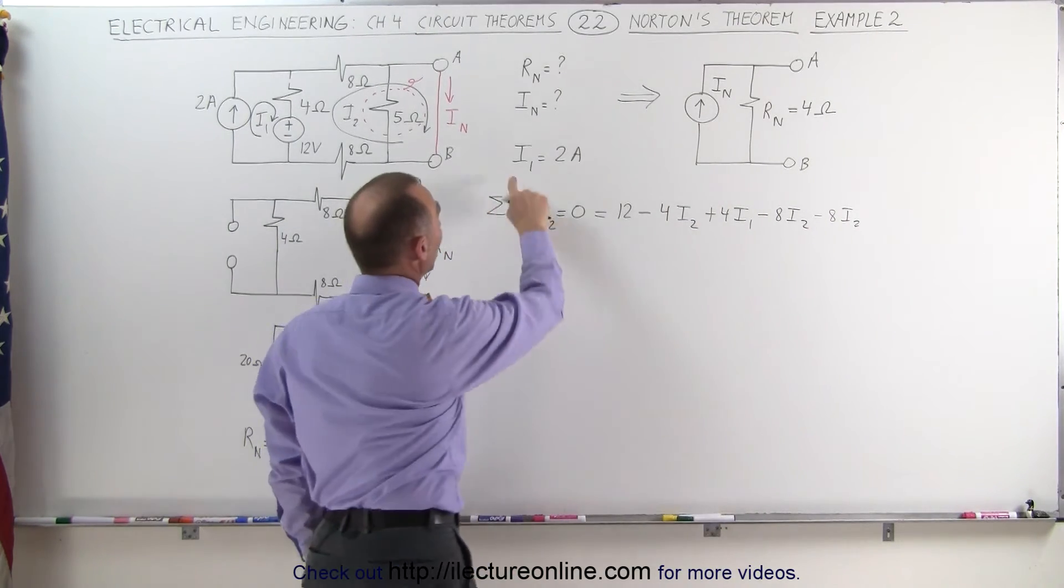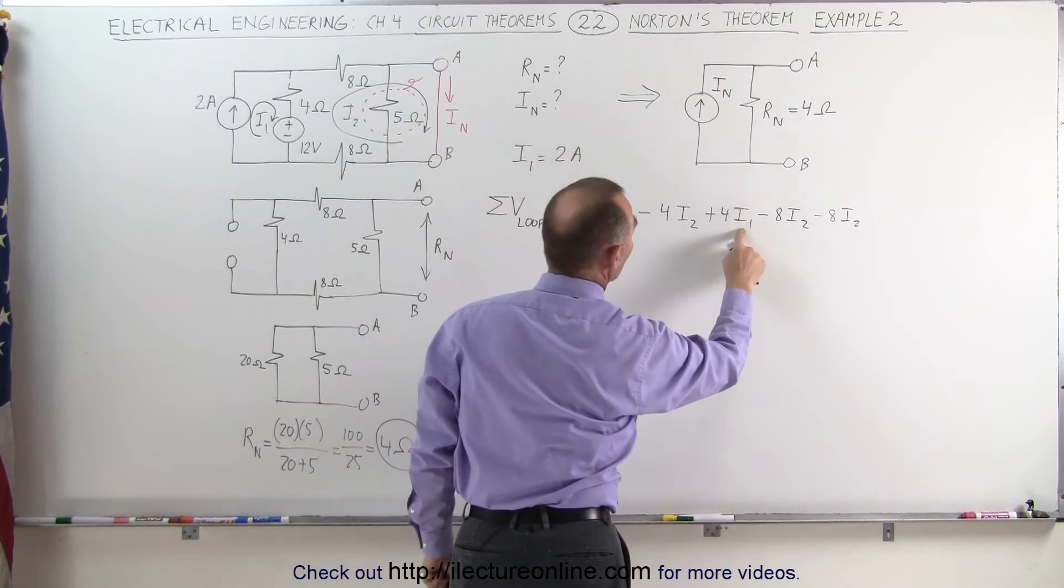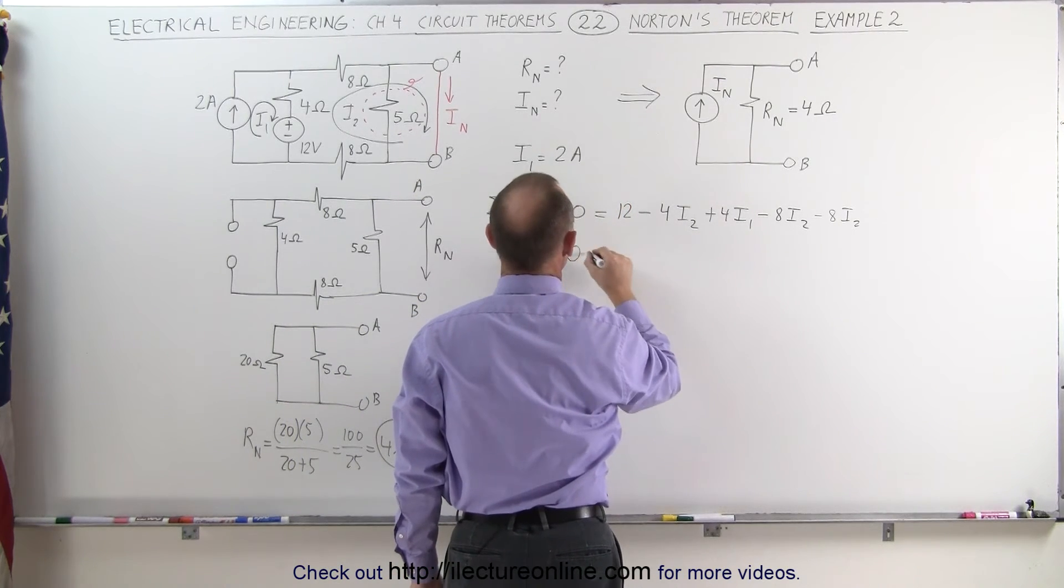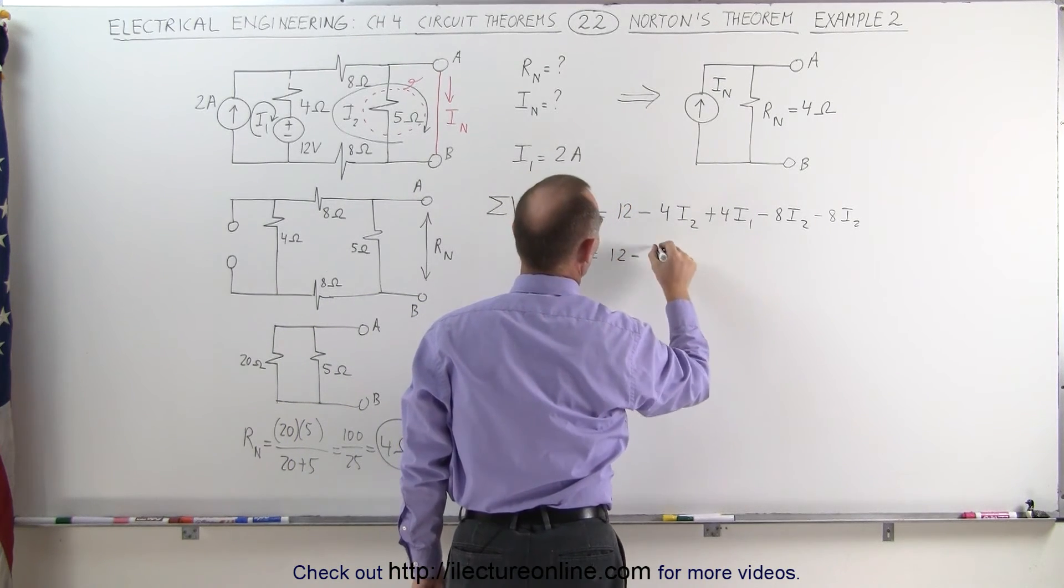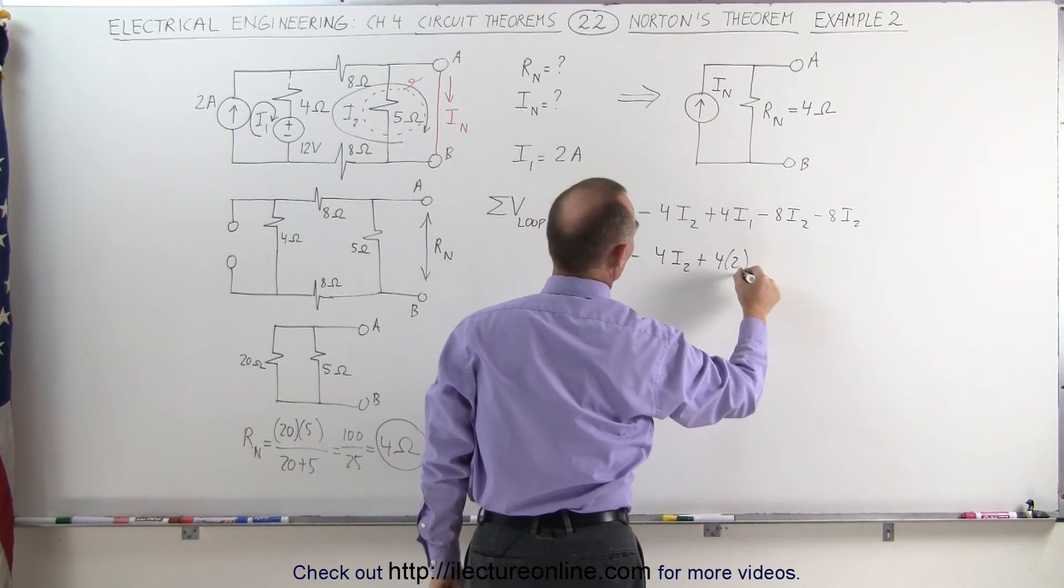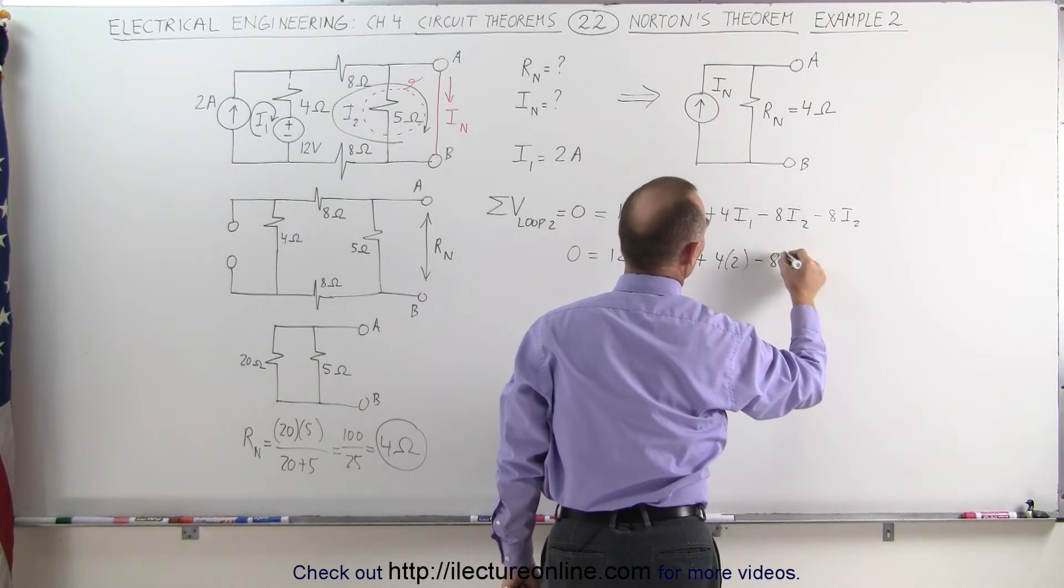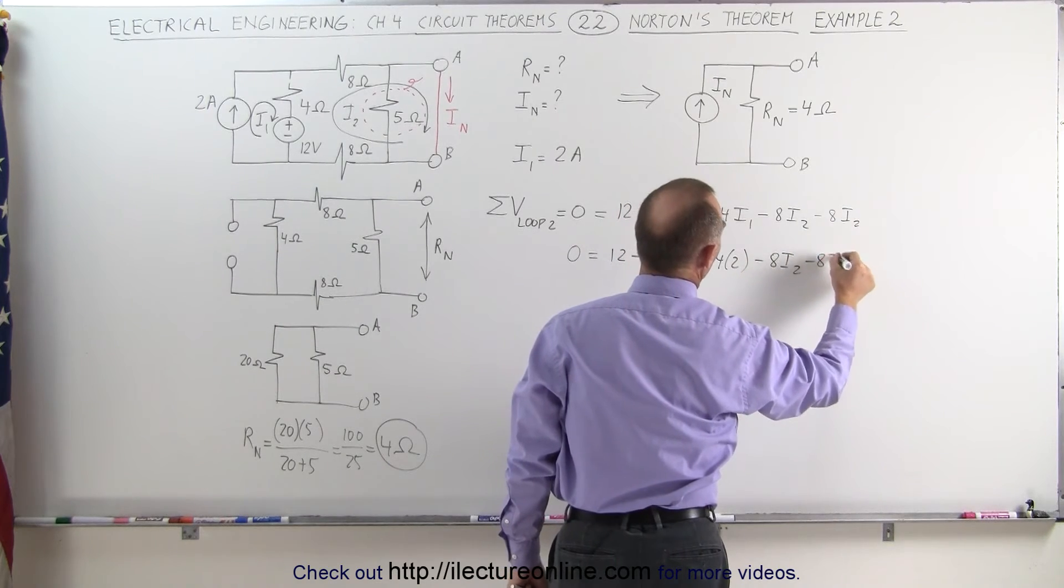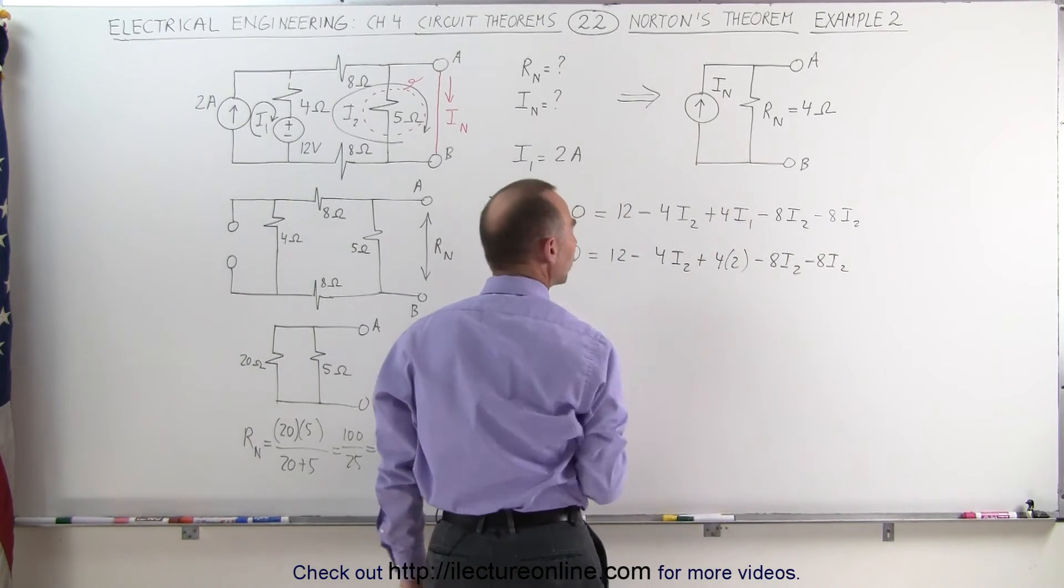Now that I know that I1 is equal to 2 ohms, I can replace I1 by 2. 0 equals 12 minus 4 I2 plus 4 times I1 which is 2 minus 8 I2 and minus 8 I2. I can combine all I2 terms.